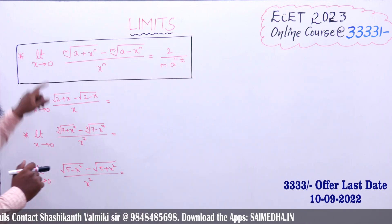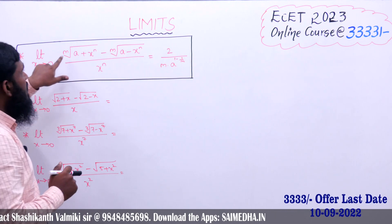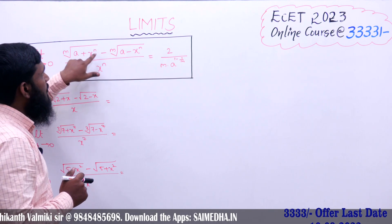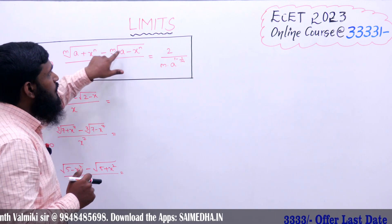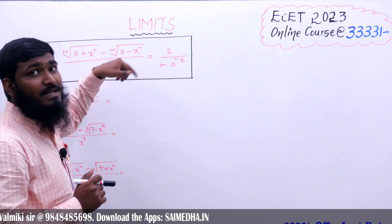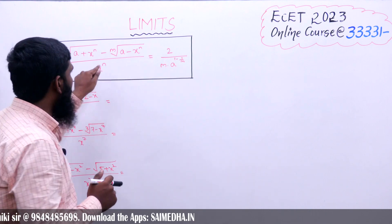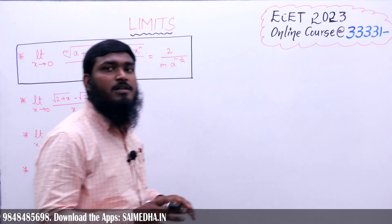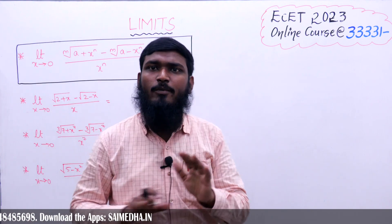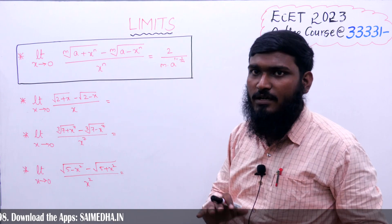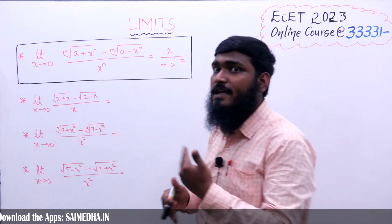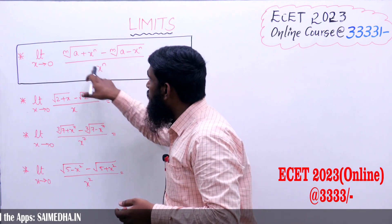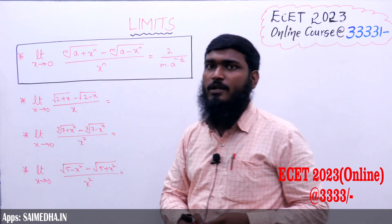Let us see the shortcut for the limit as x tends to 0 of: mth root of (a + x)^n minus mth root of (a - x)^n, divided by x^n. First let us discuss the conditions under which this shortcut can be used.